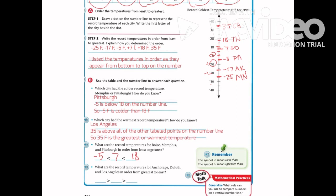The next question asks for the record temperatures for Anchorage, Duluth, and Los Angeles in order from least to greatest. Duluth at negative 25 is the least, then Anchorage at negative 17, and Los Angeles at positive 35 is the greatest.